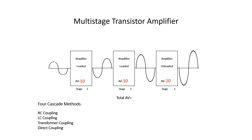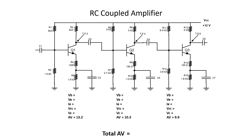How would we figure out the AV total, or the final output — the input to stage one amplified how many times to give us the output of stage three? To figure that out, we're going to take stage one's AV times stage two, and then multiply that times stage three, and that should give us an AV total of 1,000. Now let's move on to the RC coupling transistor amplifier.